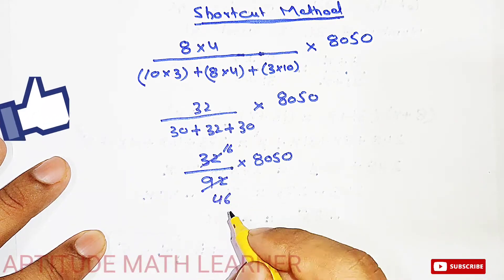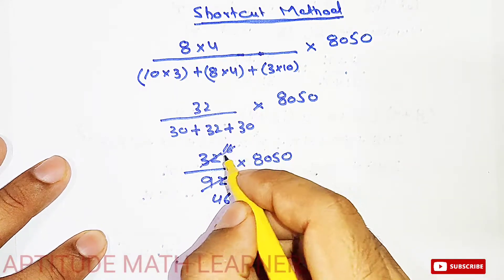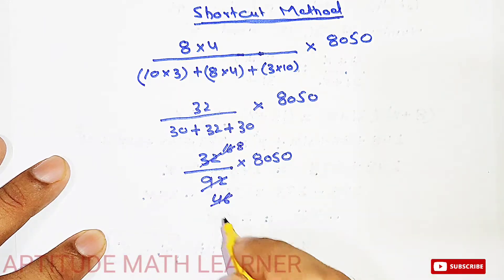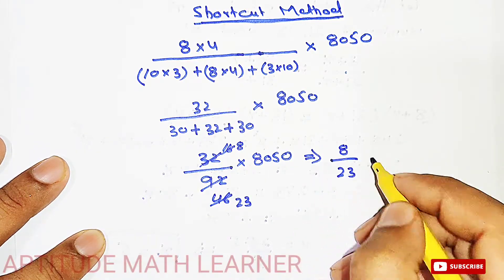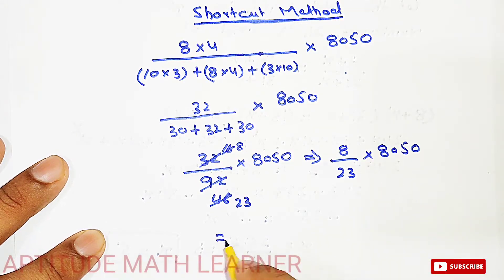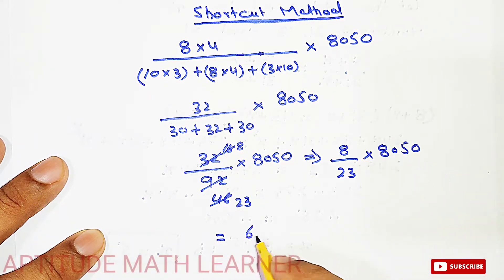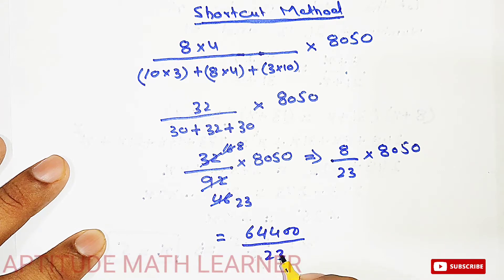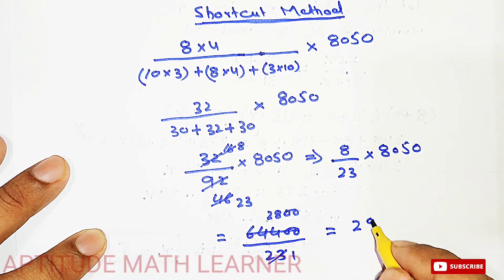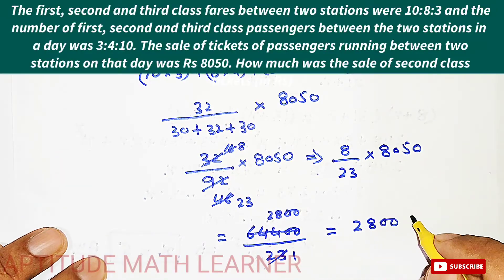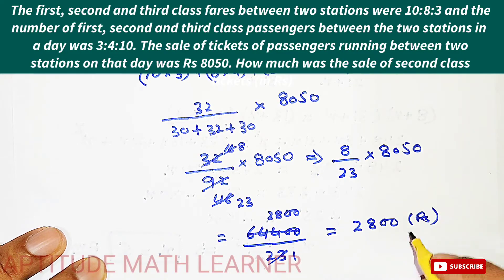We simplify by dividing by 2: 32/92 becomes 16/46, and dividing by 2 again gives 8/23. So we have 8/23 × 8050. Multiplying 8 × 8050 gives 64400. Dividing 64400 by 23 gives 2800. So the amount collected from second class tickets is 2800 rupees.